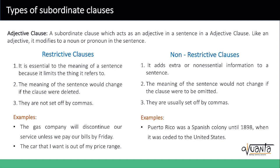A lot of students ask me whether they can use commas and convert a restrictive clause into a non-restrictive clause to solve a modifier error. No, you can't do that. If it's a restrictive clause, it has to remain in that form, particularly because it is essential information and you cannot make it optional information while making the correction. So it is imperative for you to understand the difference between these two very clearly in this class.